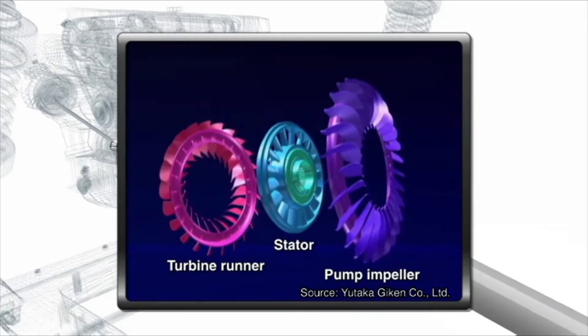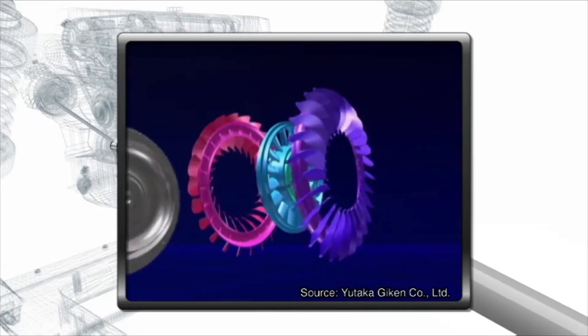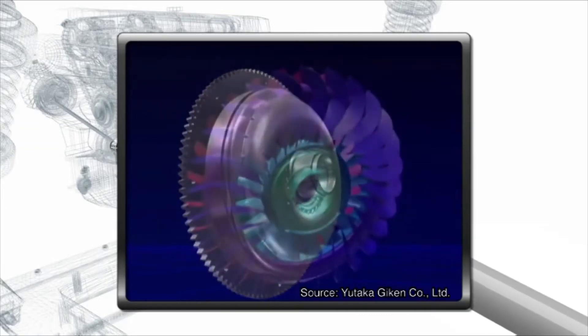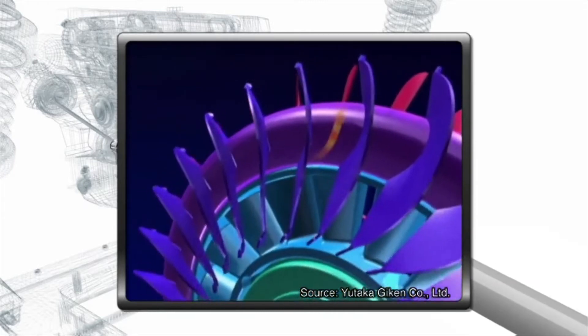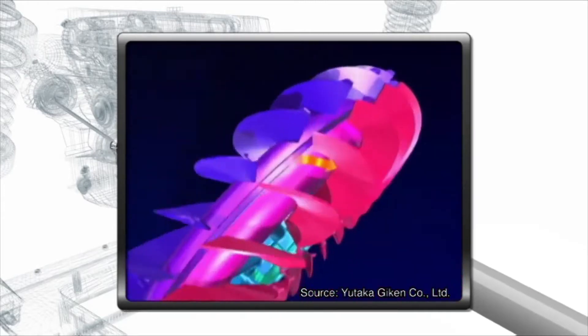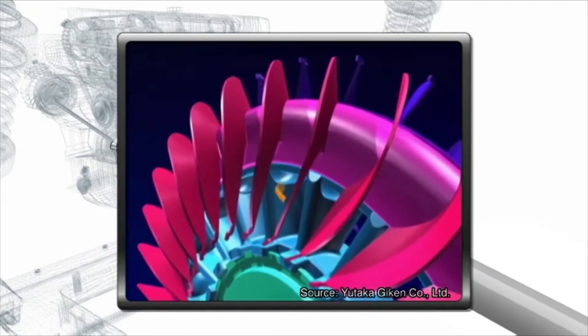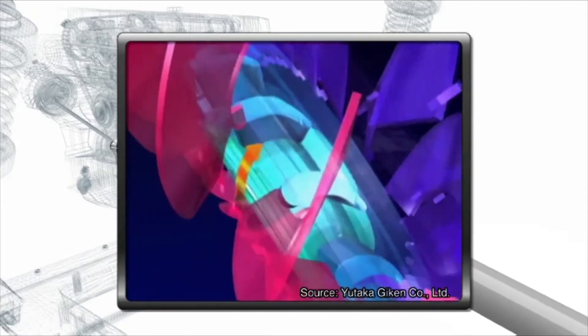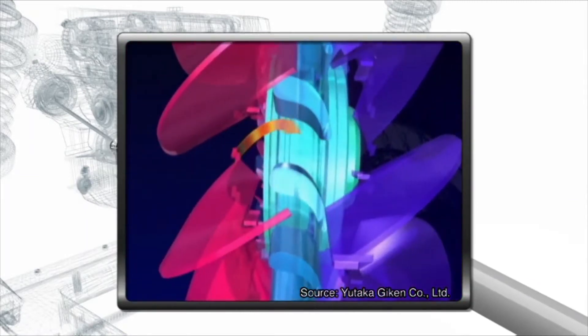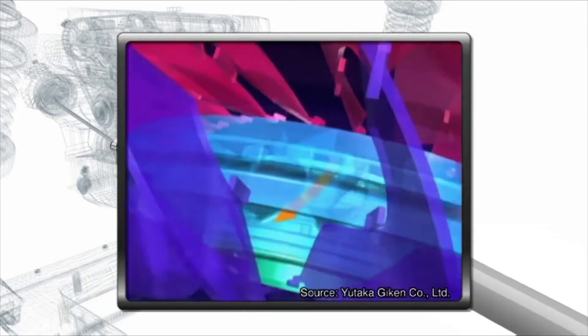Sandwiched between the pump impeller and the turbine runner is the stator, another impeller. The engine powers the pump impeller that forces out the oil, which in turn rotates the turbine runner. When the oil flows to the backside of the turbine runner, the stator redirects the reflux flow in the rotational direction of the pump impeller, contributing to the rotational force of the impeller.